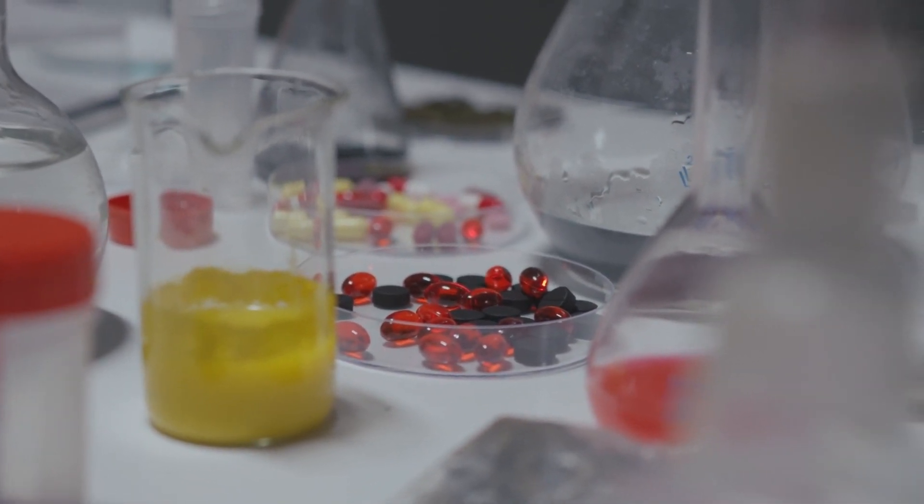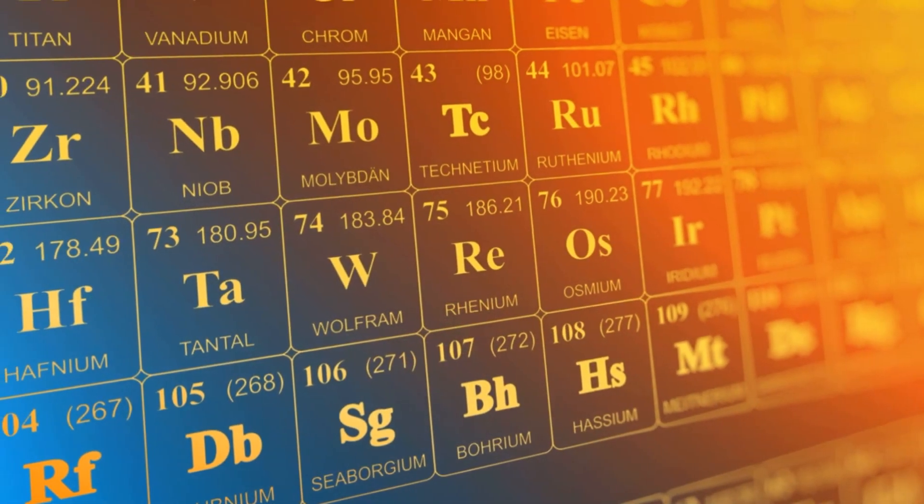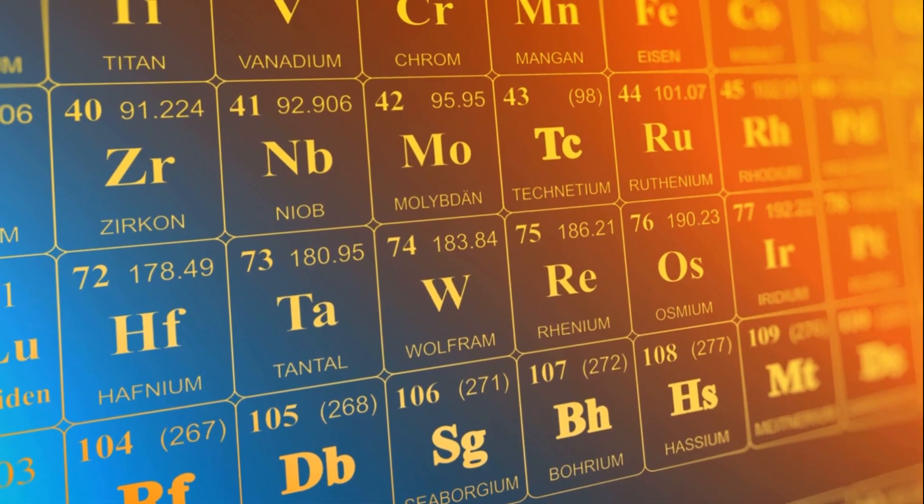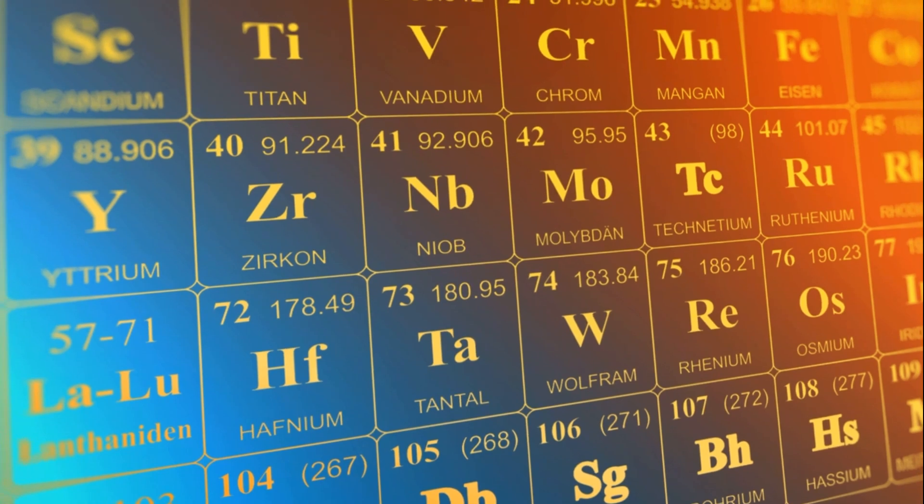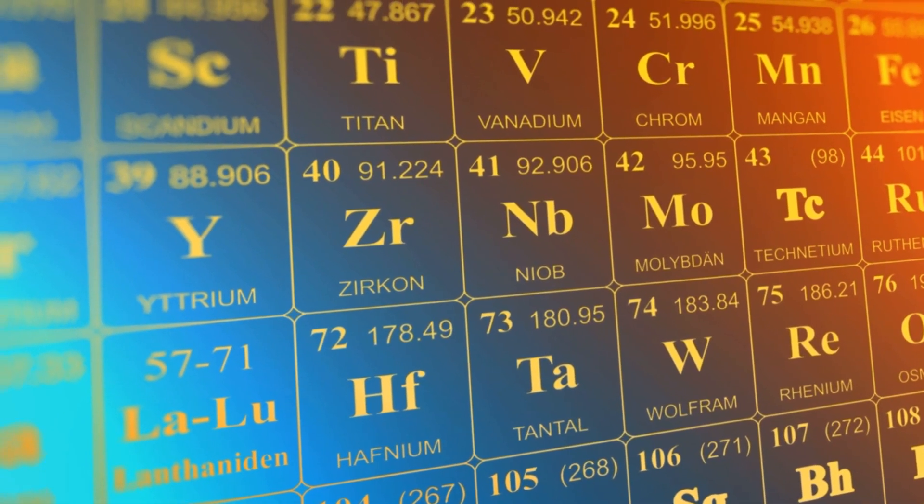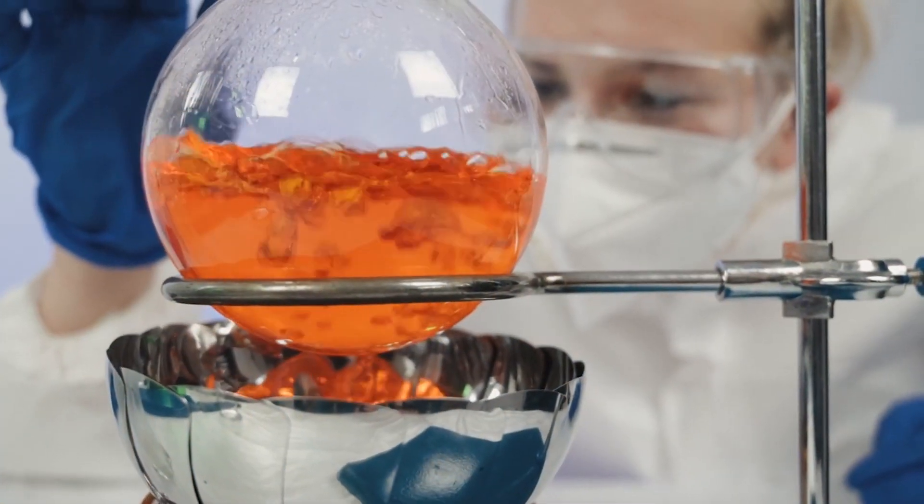No one can probably discuss the history of the Periodic Table without first recognizing the work that was accomplished by Johann Doberiner. This German chemist laid the groundwork for the Periodic Table of Elements.